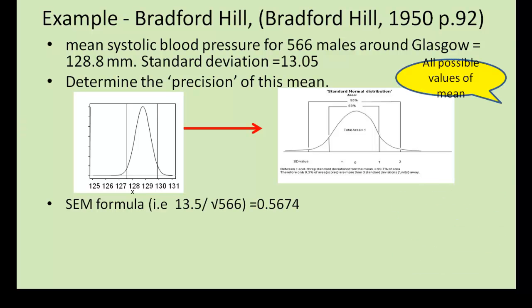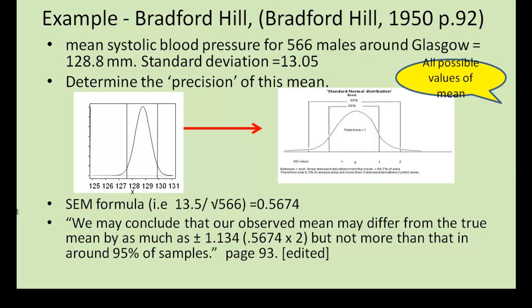By using the SEM formula with the values we've got, that is 13.5 divided by the square root of 566, which gives us 0.5674, we can say that 2 times this value each side of the estimated mean will give us a quantitative measure of the precise variability across samples for around 95% of them. So, quoting and slightly adapting Bradford Hill, we may say that our observed mean may differ from the true mean by as much as 128.8 plus or minus 1.134, which is 2 times our standard error, millimeters of mercury, but no more than that in around 95% of their samples. So Bradford Hill only needed to take 566 measurements to make predictions about the total population of Glasgow.